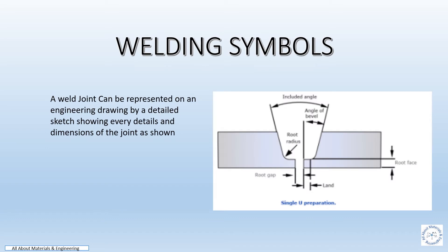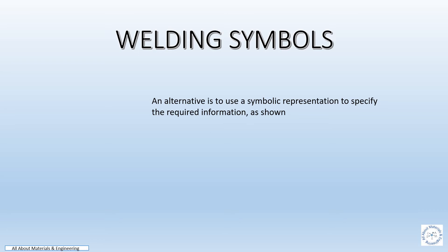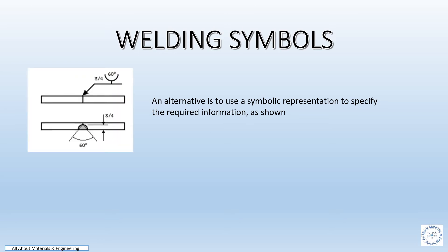In this video we are going to see about the elementary welding symbols, the combination of elementary welding symbols, and their illustration of joint preparation. A welding joint can be represented on an engineering drawing by a detailed sketch showing every detail and dimension of the joints. While this method gives comprehensive information, it can be time-consuming and overburden the drawing. To overcome this, an alternative is the use of symbolic representation to specify the required information.